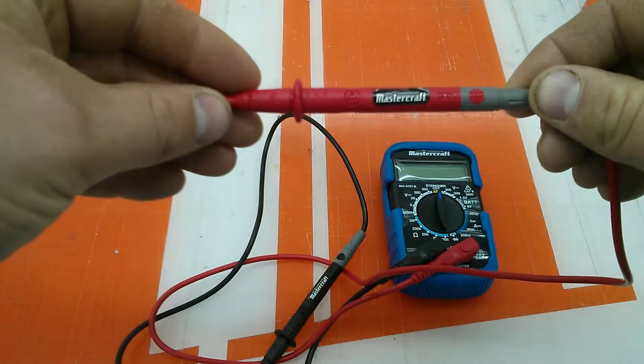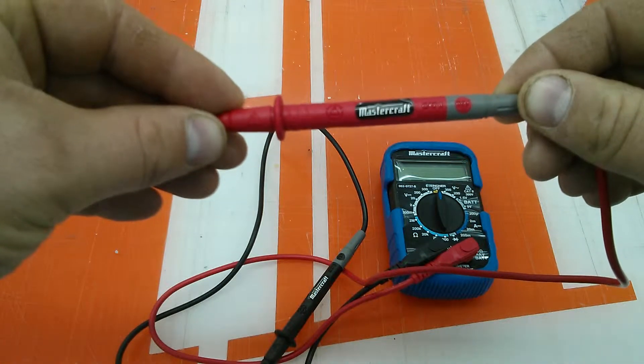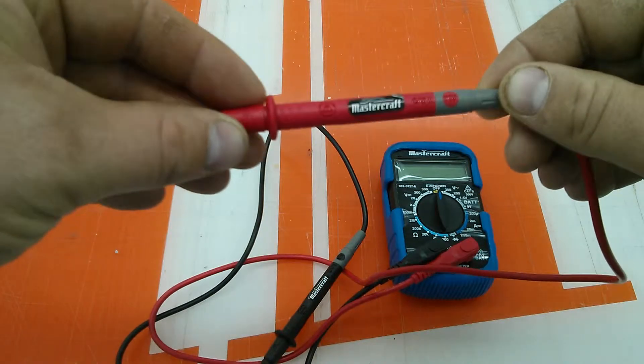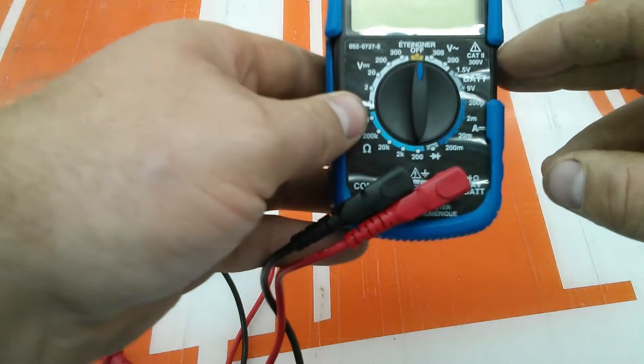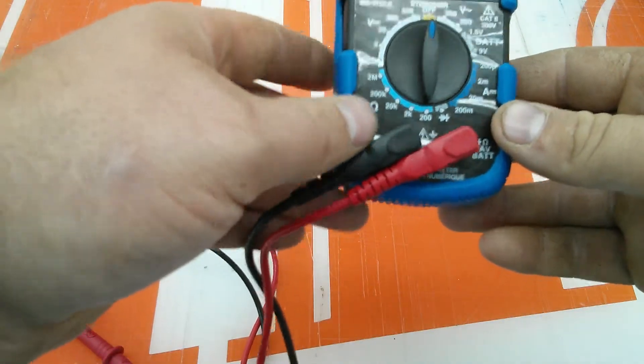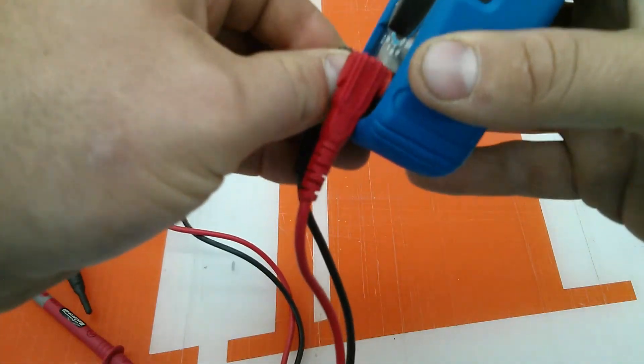They are marked on the probe itself - they claim to be category 2 at a thousand volts. The meter itself however is marked category 2 at 300 volts, so it's not a high voltage meter.